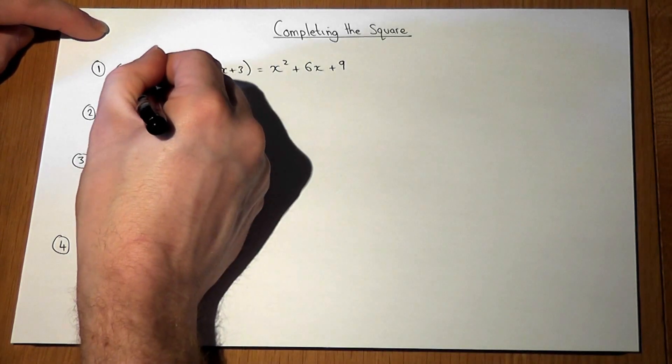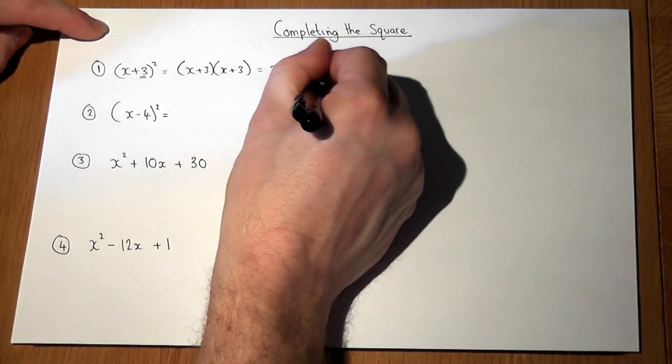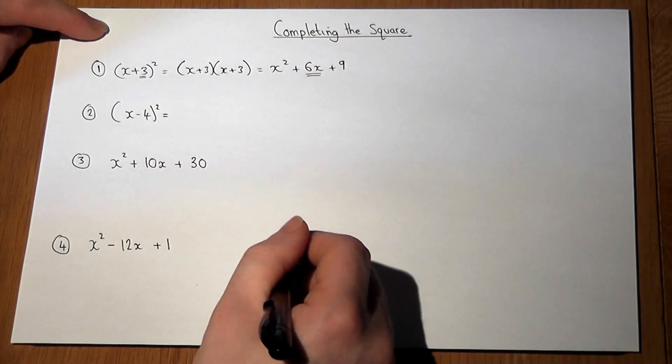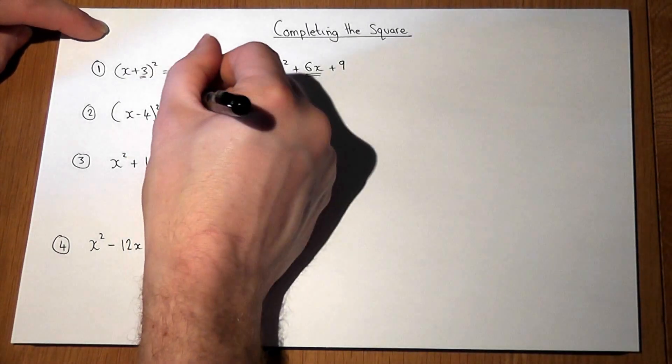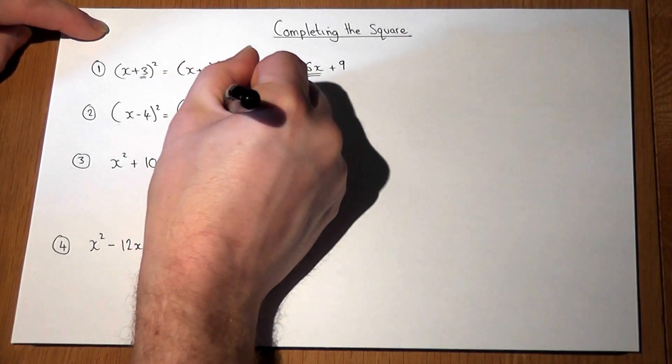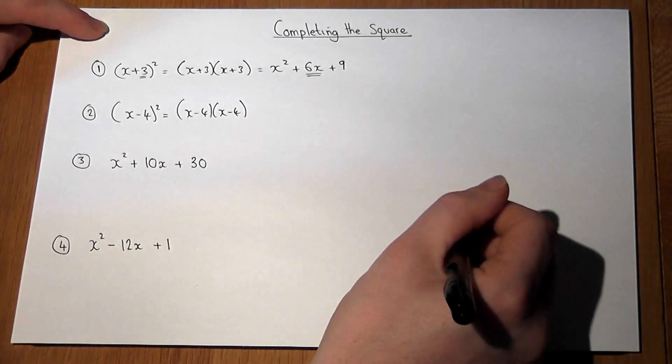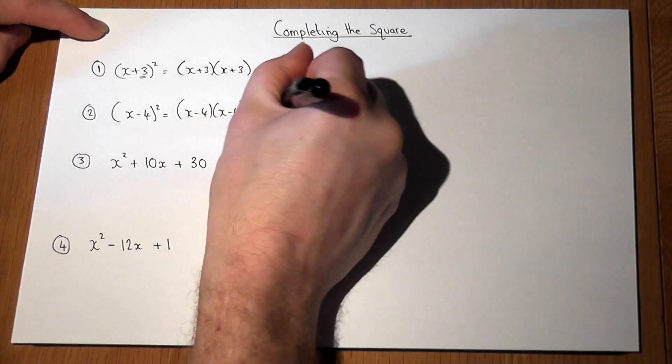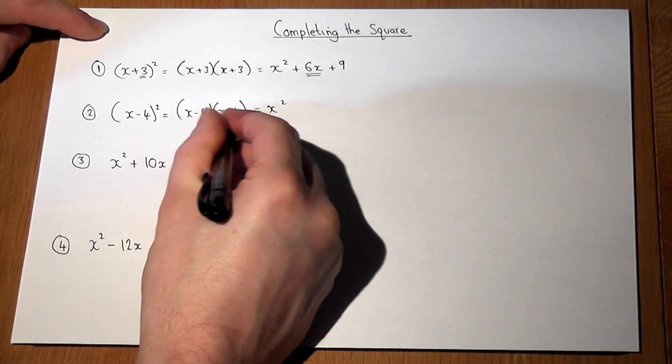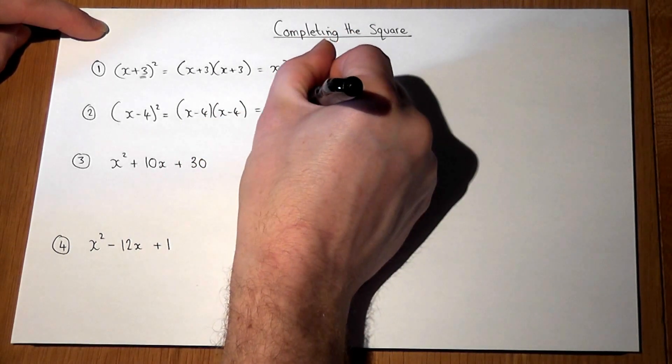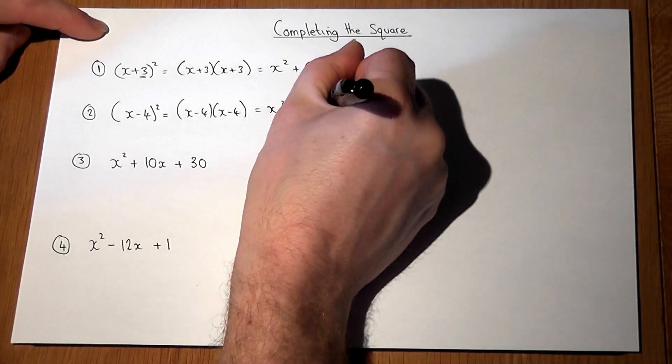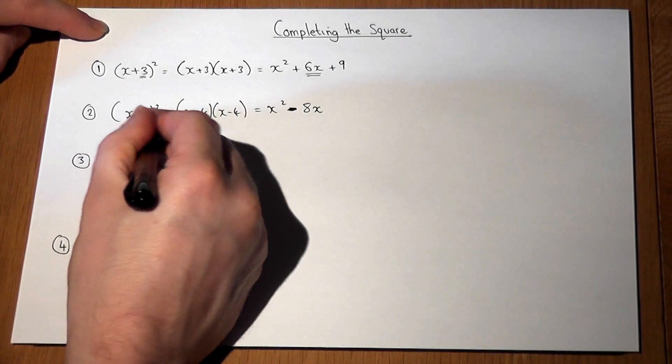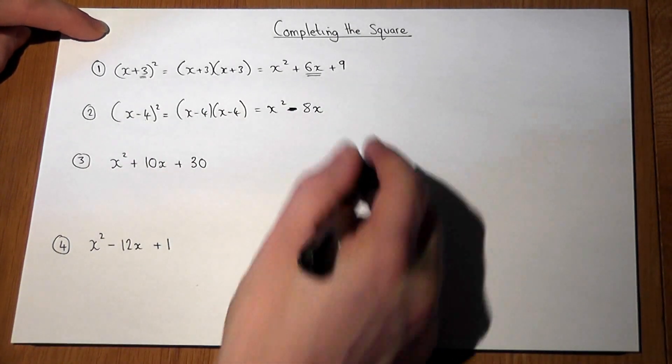Basically, the number here doubles to give the coefficient of x. If we look at the second one, that's the same as (x - 4) times (x - 4). We get x² minus 4 take away 4 is -8x. Again, we've doubled -4 to give it to -8.